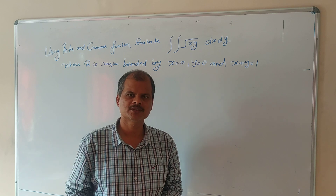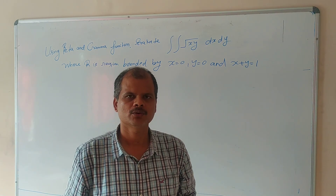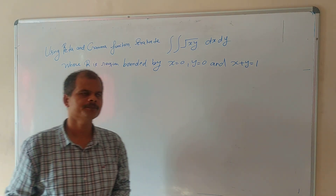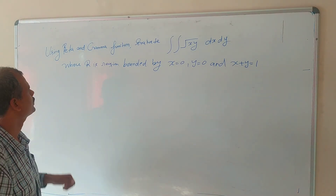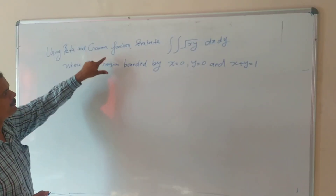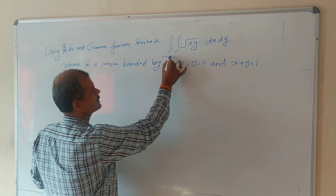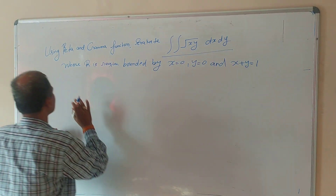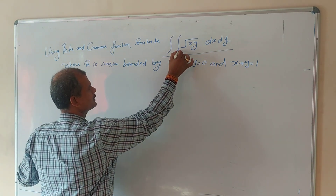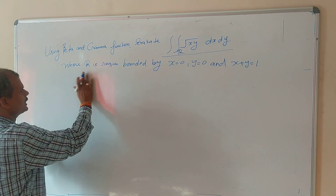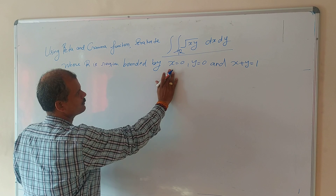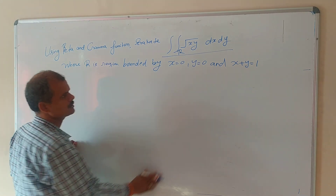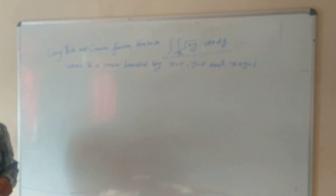Sometimes, if you use the beta and gamma function, your double integration will be easy to calculate. The question is: using beta and gamma function, we will evaluate this integral over the region R, where R is the region bounded by x equal to 0, y equal to 0, and x plus y equal to 1.